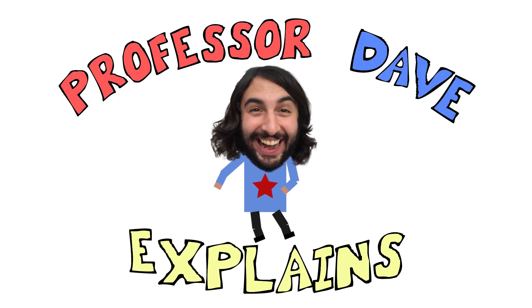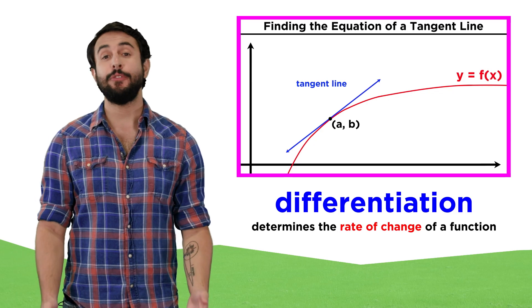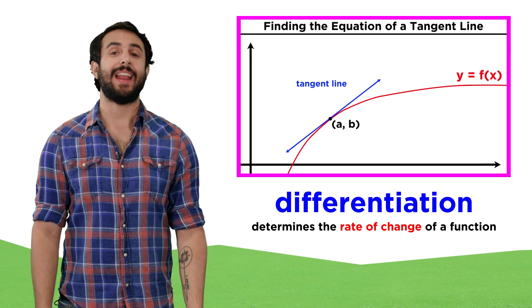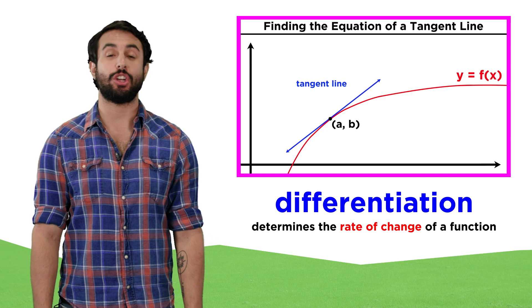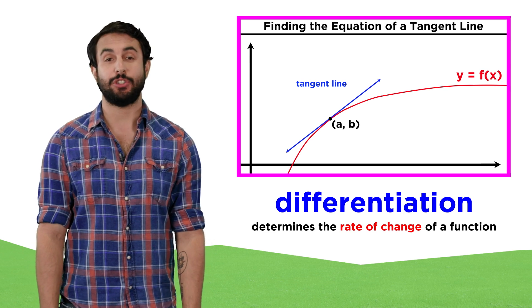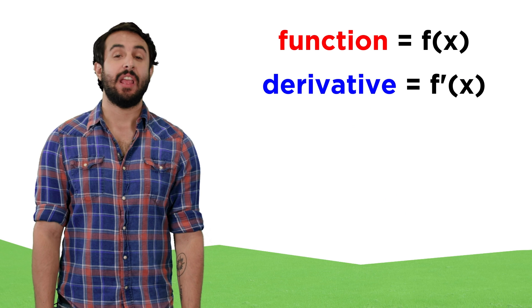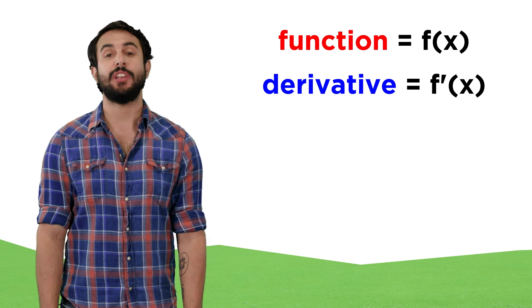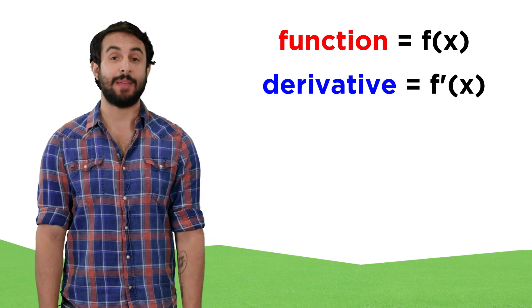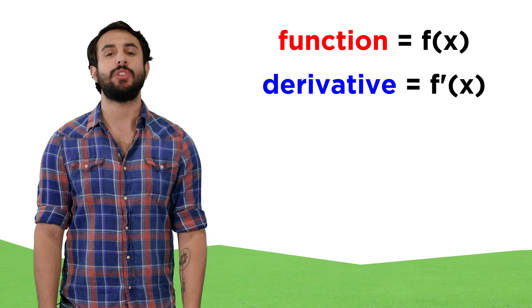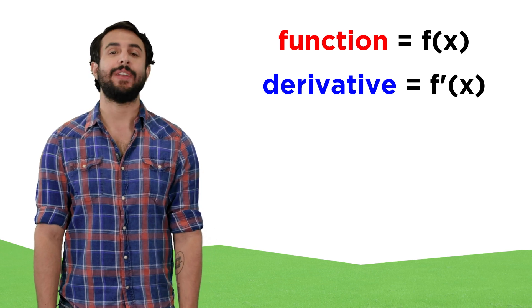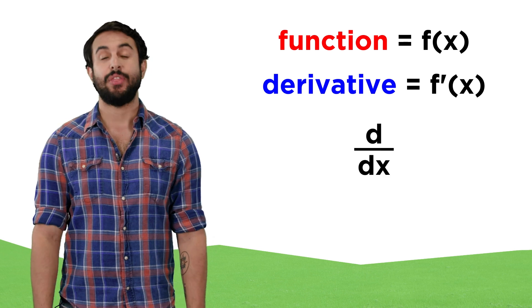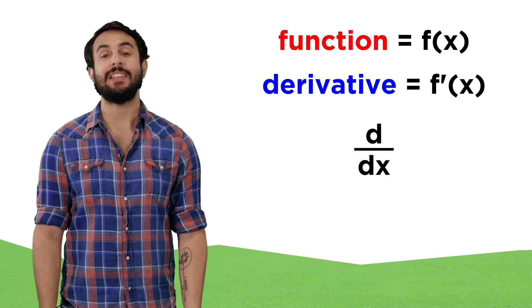Professor Dave here, let's revisit differentiation. When we first learned about differentiation, we saw it as a way to determine the rate of change for a curve given by some function f. When taking derivatives, the way we expressed the operation was by using this prime symbol, so the derivative of f was f'. But there is another notation which we have introduced in the past that will now be used much more frequently. That looks like this, which is read d dx.